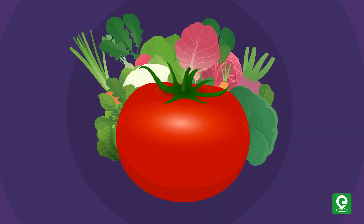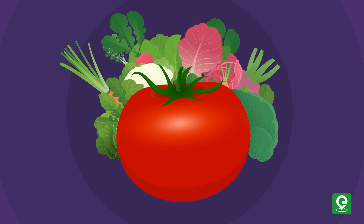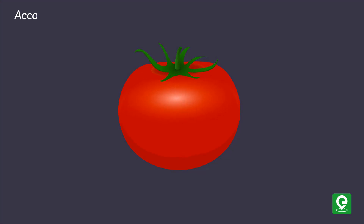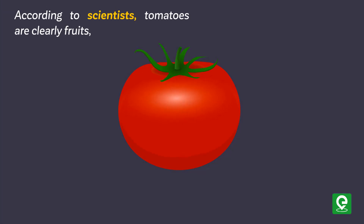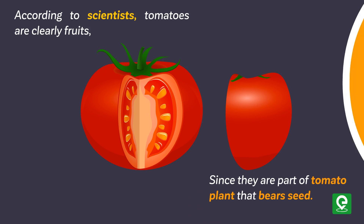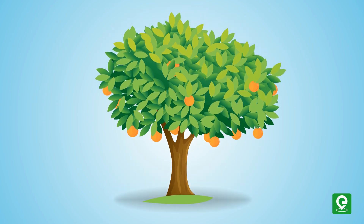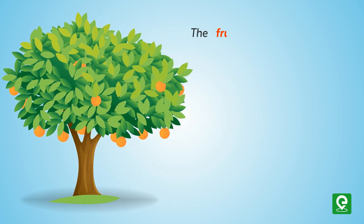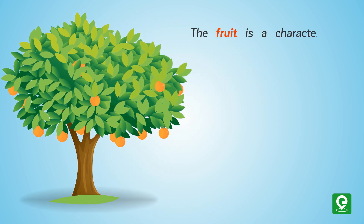Using these definitions, we can begin to answer the question of whether a tomato is a fruit or vegetable. According to scientists, tomatoes are clearly fruits since they are part of the tomato plant that bears seeds. Let's study more about fruit — it is a characteristic feature of the flowering plants.